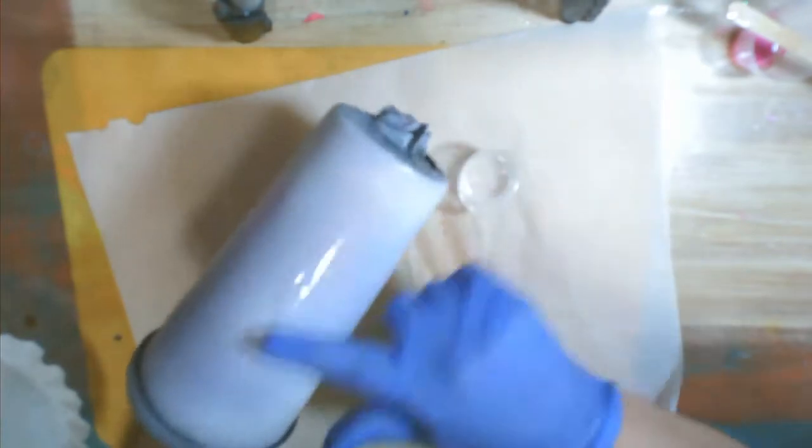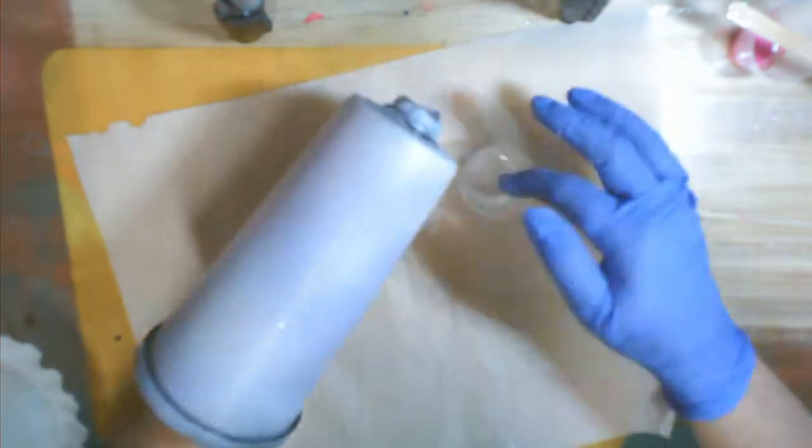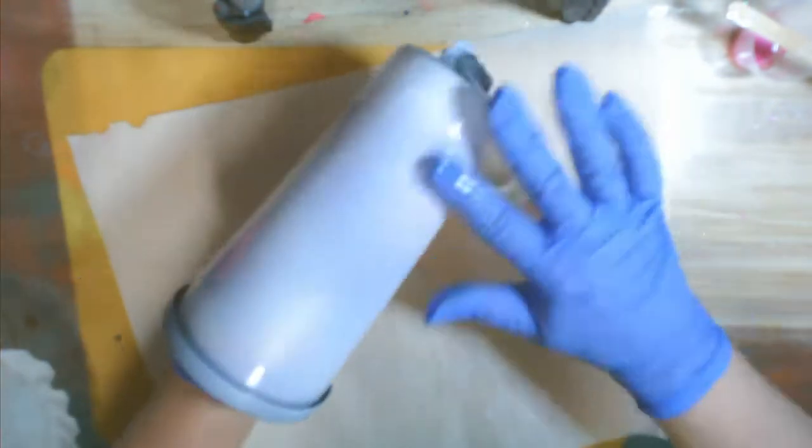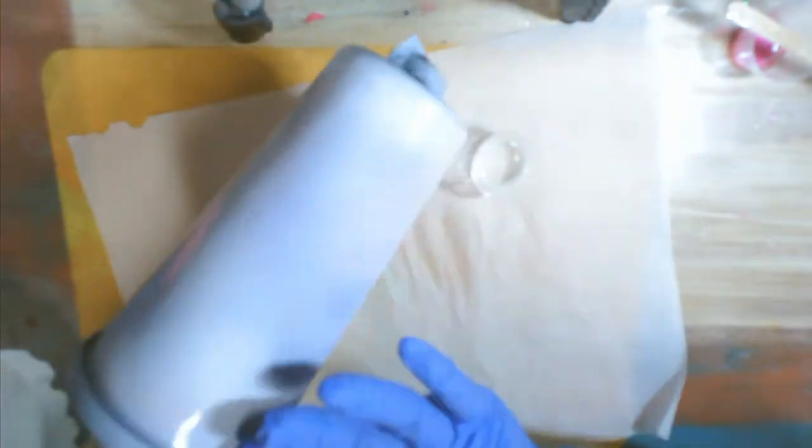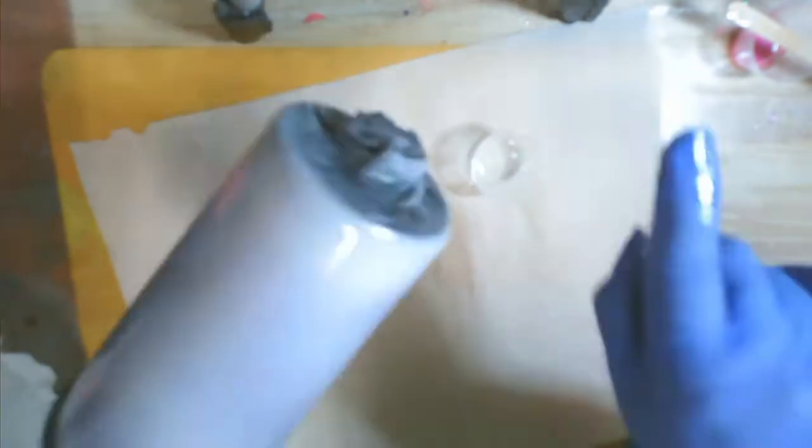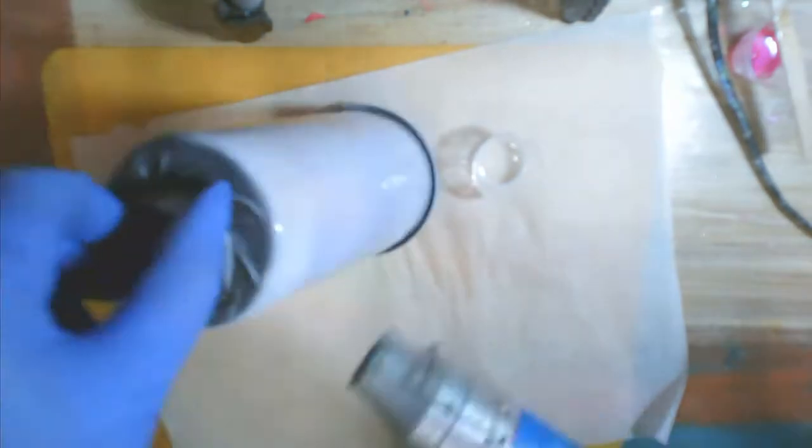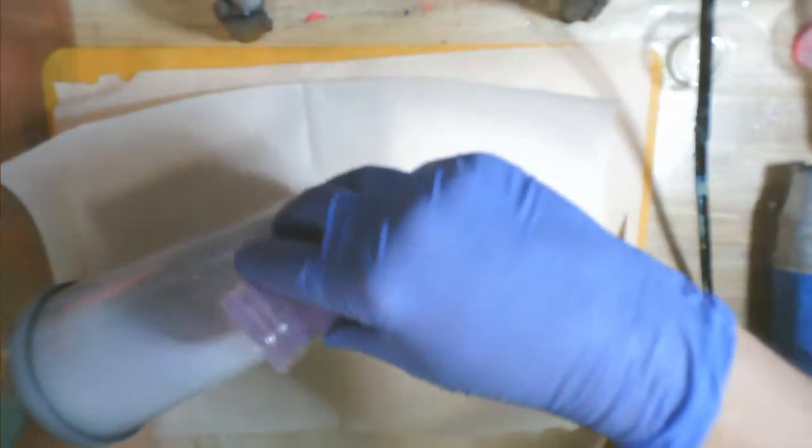I've already spray painted my tumbler surface using a combination of lavender and white. Now I'm just putting a very thin coat of resin on the surface of the tumbler. You can't get it too thick because if you get it too thick, you won't be able to get that plastic outer sleeve back over the steel part of your tumbler.